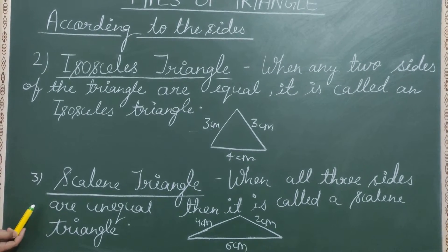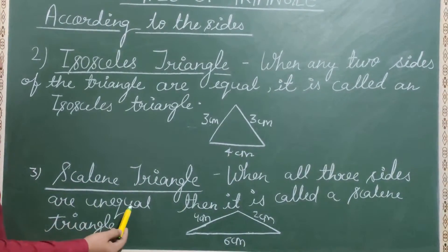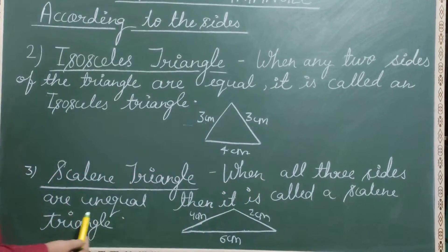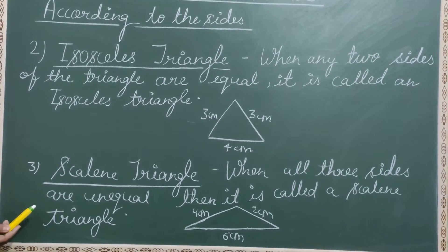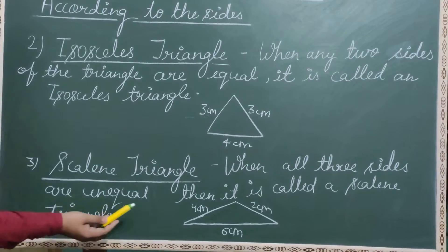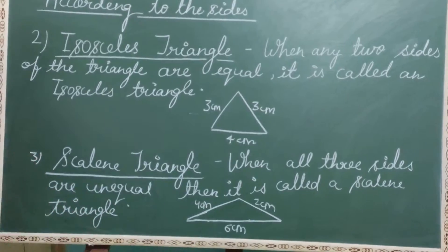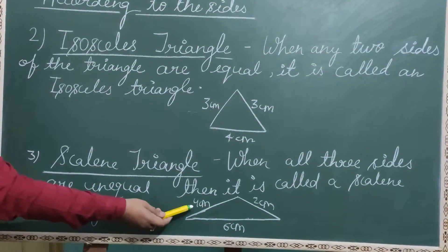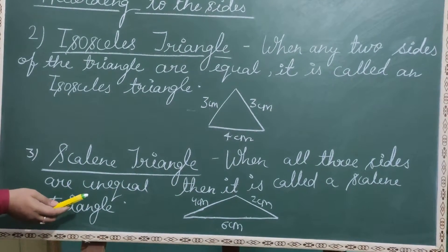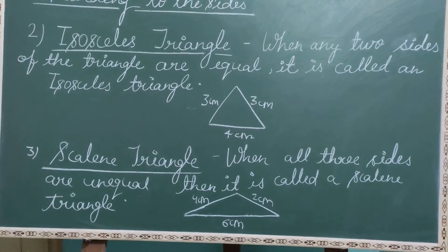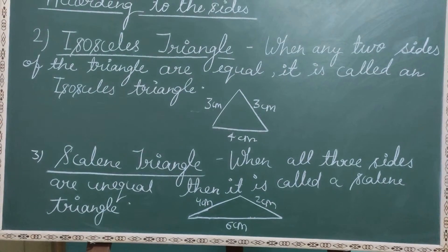The third type is the scalene triangle. When all three sides of a triangle are unequal, it is called a scalene triangle. For example, this triangle has sides of four centimeters, two centimeters, and six centimeters — all different and unequal. That is why it is a scalene triangle. After this, we will find out the types of triangles according to their angles.